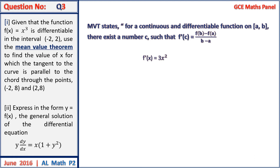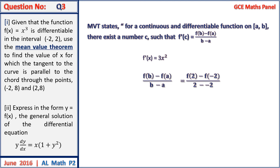Applying the theorem: f prime of x equals 3x squared, and f of B minus f of A on B minus A equals f of 2 minus f of minus 2, all on 2 minus minus 2, giving a value of 4.